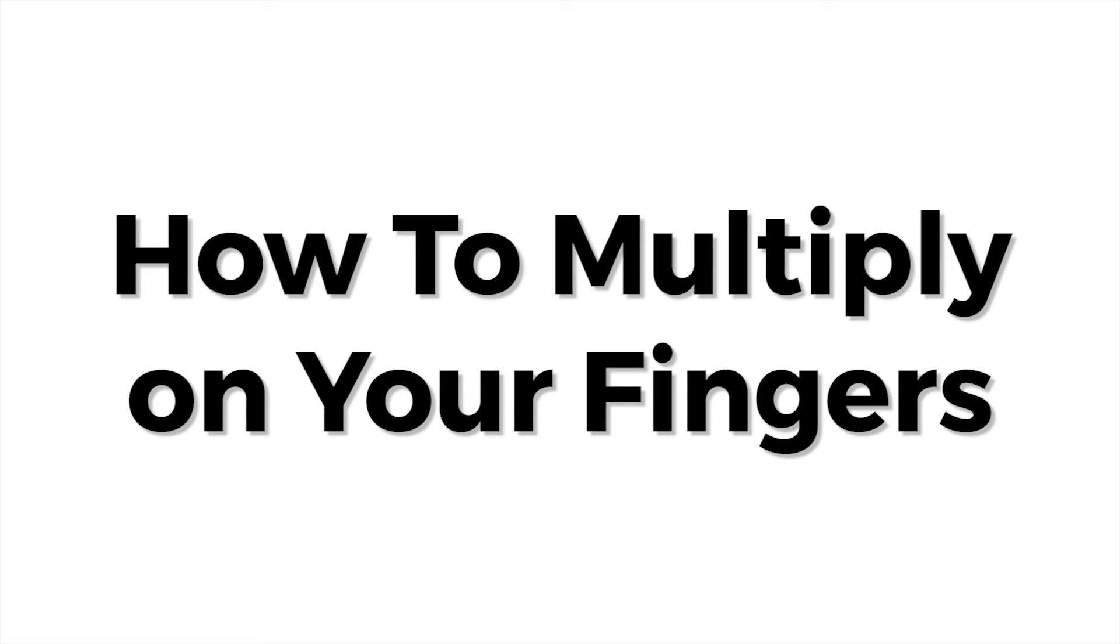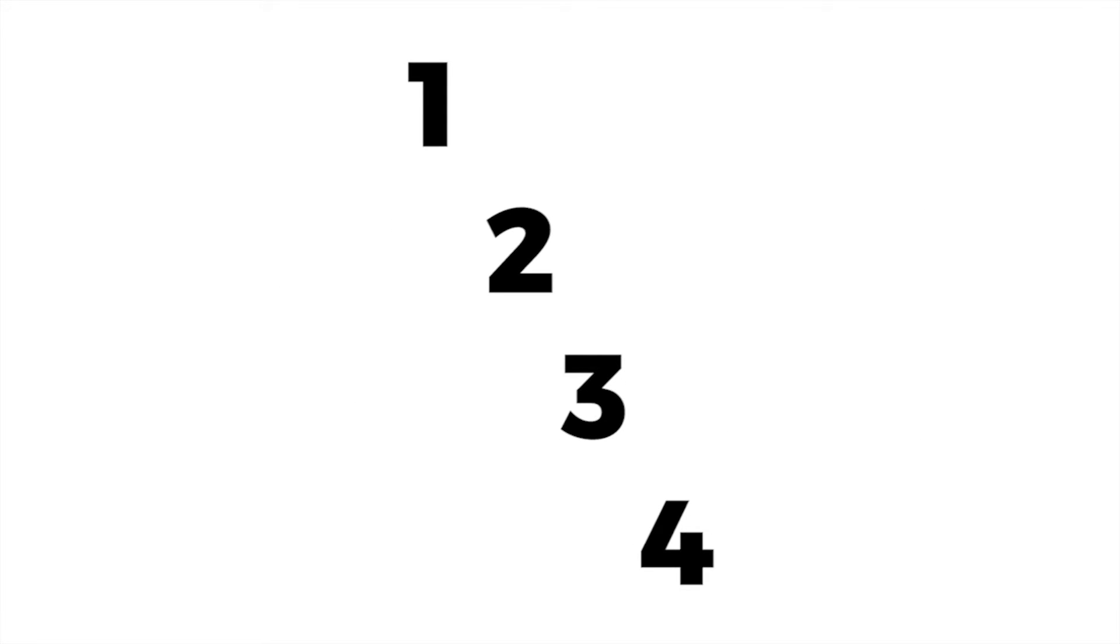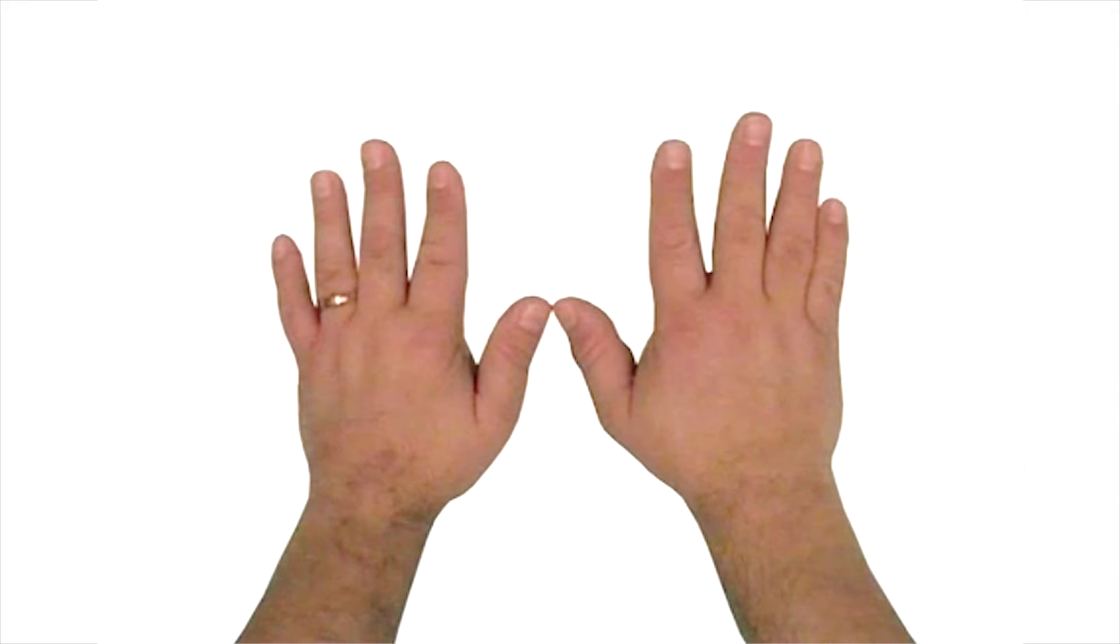Multiplication is easy. If you can multiply the numbers between 1 and 4, then you can also multiply by 5, 6, 7, 8, 9, and 10, using nothing more than your fingers and thumbs.